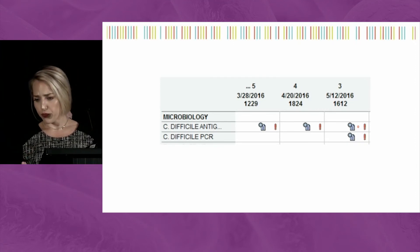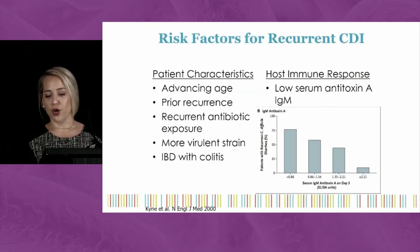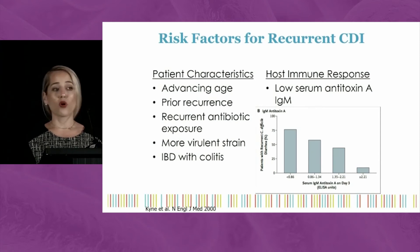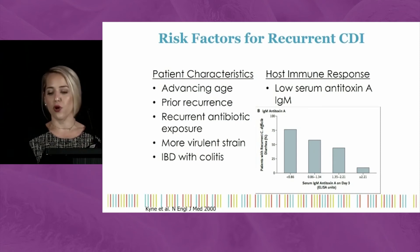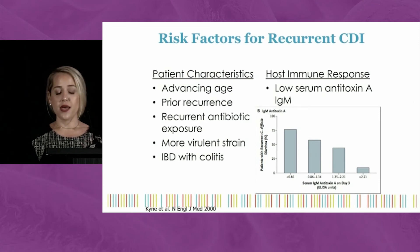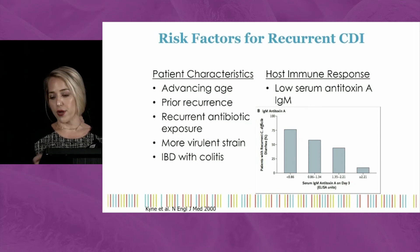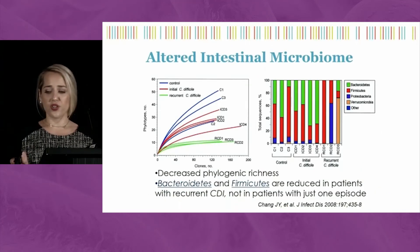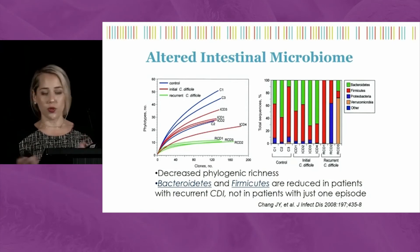Risk factors for recurrent C. diff include advancing age, any prior recurrence, recurrent antibiotic exposure or long-term antibiotic therapy, more virulent strains such as NAP1 as the initial infection, IBD with colitis as we discussed, and low serum antitoxin IgM—meaning your host immune response really does put you at risk for increased recurrence.